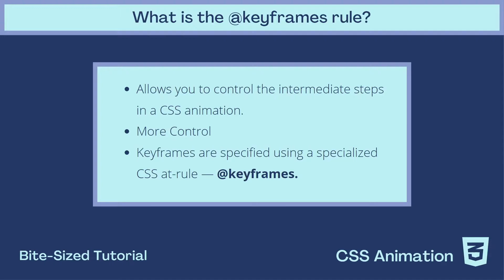The keyframes rule is the workhorse of CSS animations. What it does is allow us to control the intermediate steps in a CSS animation. When you specify CSS style inside the keyframe rule, the animation will gradually change from the current style to the new style at certain times that you specify, and you can change the CSS styles as many times as you want. To initialize a keyframes function you must first specify it using a specialized CSS at-rule — the @ symbol followed by the keyframes keyword.